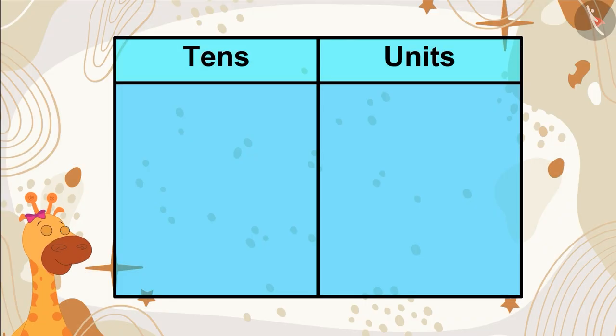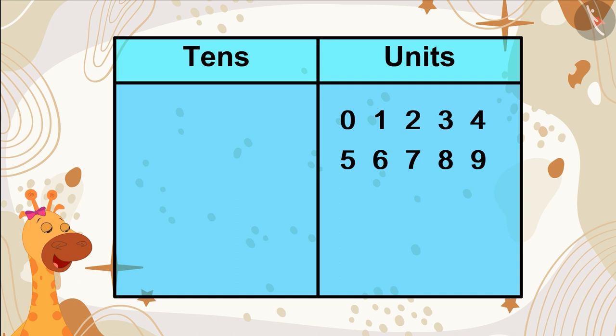We always write numbers from zero to nine in the units place and when that number becomes ten, we can make the bundle of tens. So, it is written in the tens place.